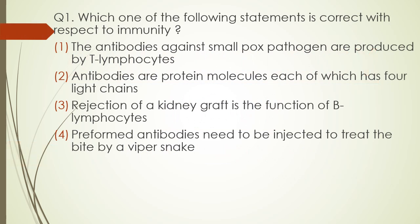Which one of the following statements is correct with respect to immunity? Option one: the antibodies against the smallpox pathogen are produced by T lymphocytes. Option two: antibodies are protein molecules each of which has four light chains. Option three: rejection of kidney graft is a function of B lymphocytes. Option four: preformed antibodies need to be injected to treat the bite of a viper snake.